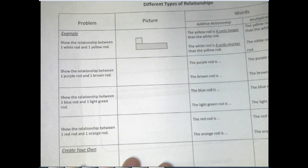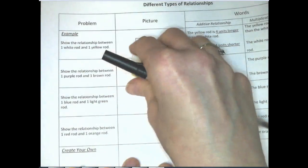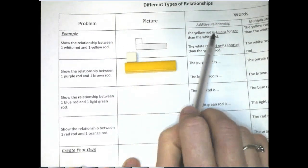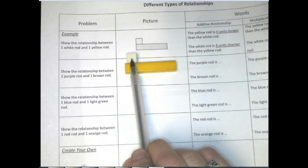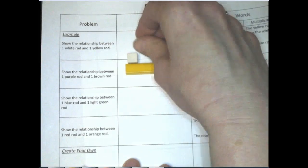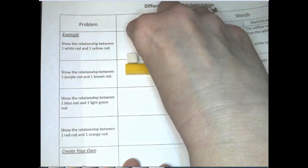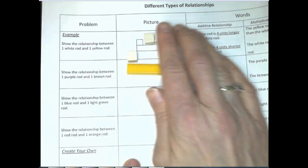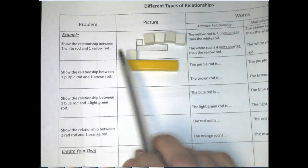They were asking for the relationship between the Cuisinaire rod for a yellow and a white. The additive relationship is that the yellow is four units longer than the white. It's because it takes four more units — one, two, three, four — to make up the remainder of that yellow. That's why we say it's four units longer, and that's an additive relationship because we're talking about how much longer or how much shorter something is.